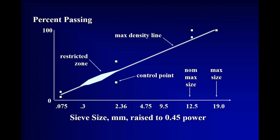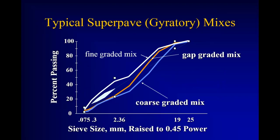The gradation distribution gives us that VMA, and we need to maintain it. It gives us the space to put our asphalt into the mix, to get adequate film thickness of the asphalt on the aggregate, and also to maintain our air voids in the mix — which is the third of those three A's we started with.